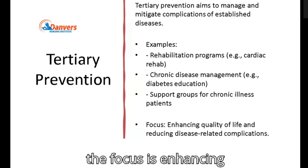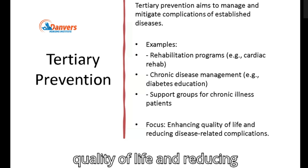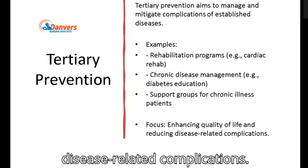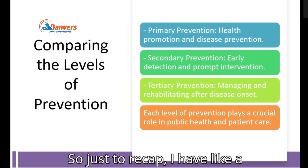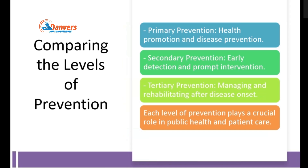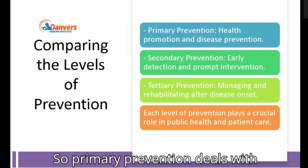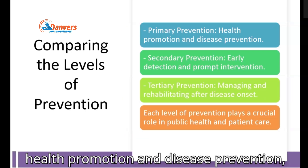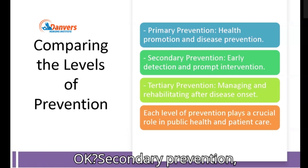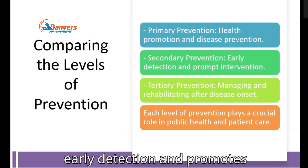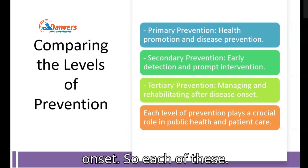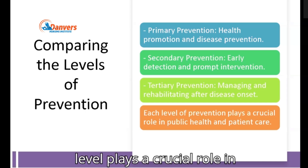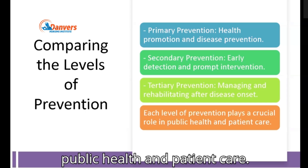So for tertiary, the focus is enhancing quality of life and reducing disease-related complications. To recap: primary prevention deals with health promotion and disease prevention; secondary prevention focuses on early detection and promotes intervention; tertiary prevention involves managing and rehabilitating after disease onset. Each of these levels plays a crucial role in public health and patient care.